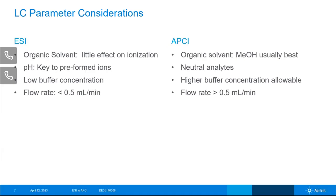For APCI, the organic solvent is very important. Of the two main organic solvents used in LC-MS — methanol and acetonitrile — methanol is able to donate a proton, while acetonitrile is not a proton donor, so it usually doesn't perform as well. Generally, for the wider range of target analytes you're running in APCI, methanol is usually the best choice. You can use a higher buffer concentration because APCI is generally less susceptible to matrix effects, but you would still want volatile buffers that are recommended for LC-MS. You would also typically use a larger flow rate of greater than 0.5 mL per minute, because that gives you more reactant for the chemical reaction happening in the source.